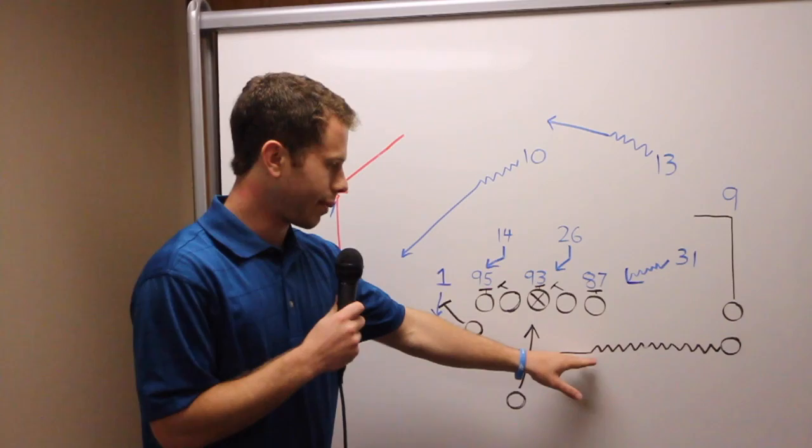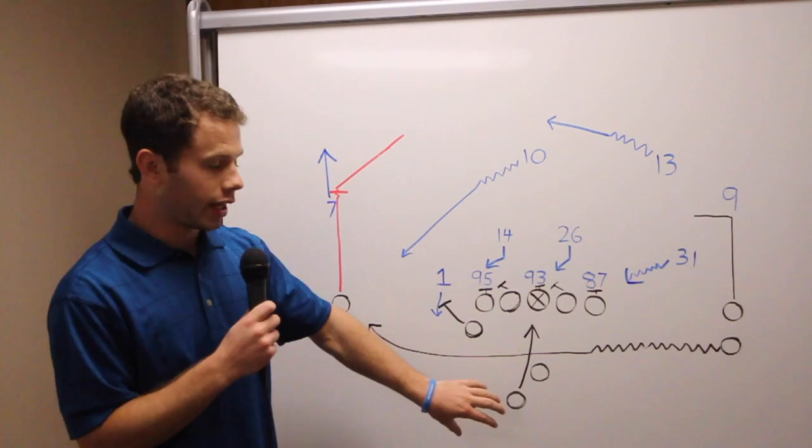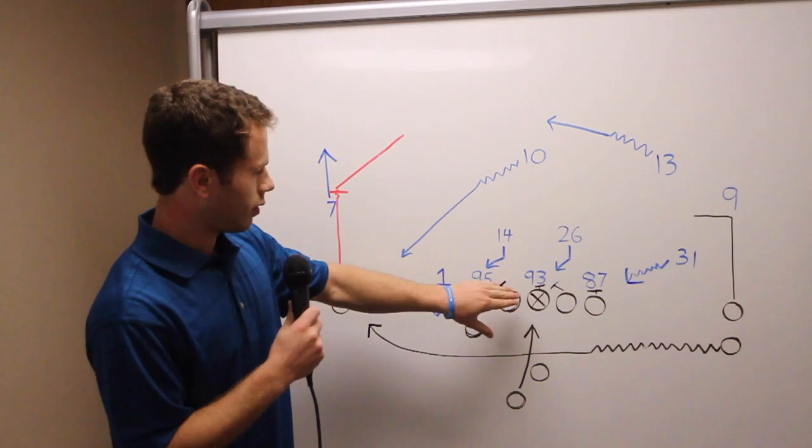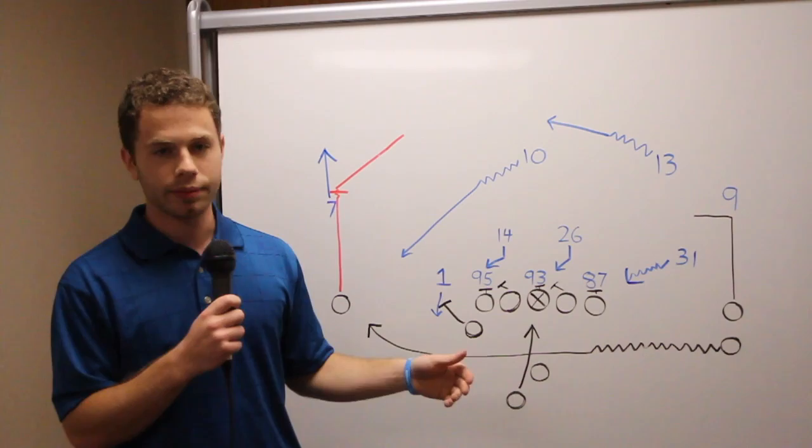So the first part of the play is the fake inside handoff, the play action to the halfback. This fake handoff draws the attention of the linebackers, and they take a few steps down to defend the inside run.